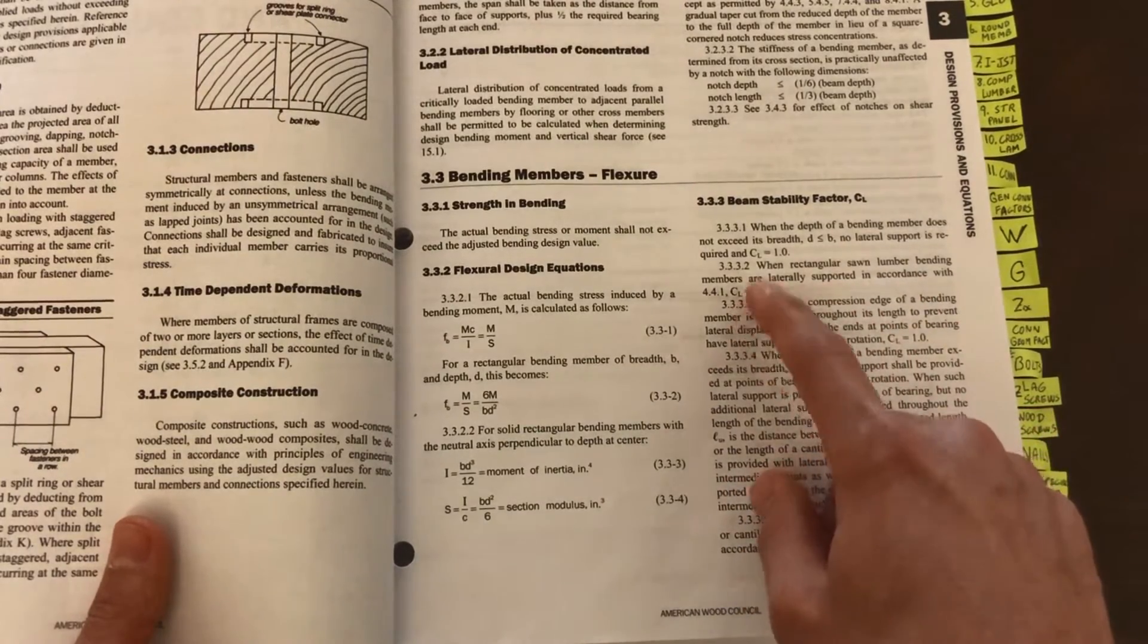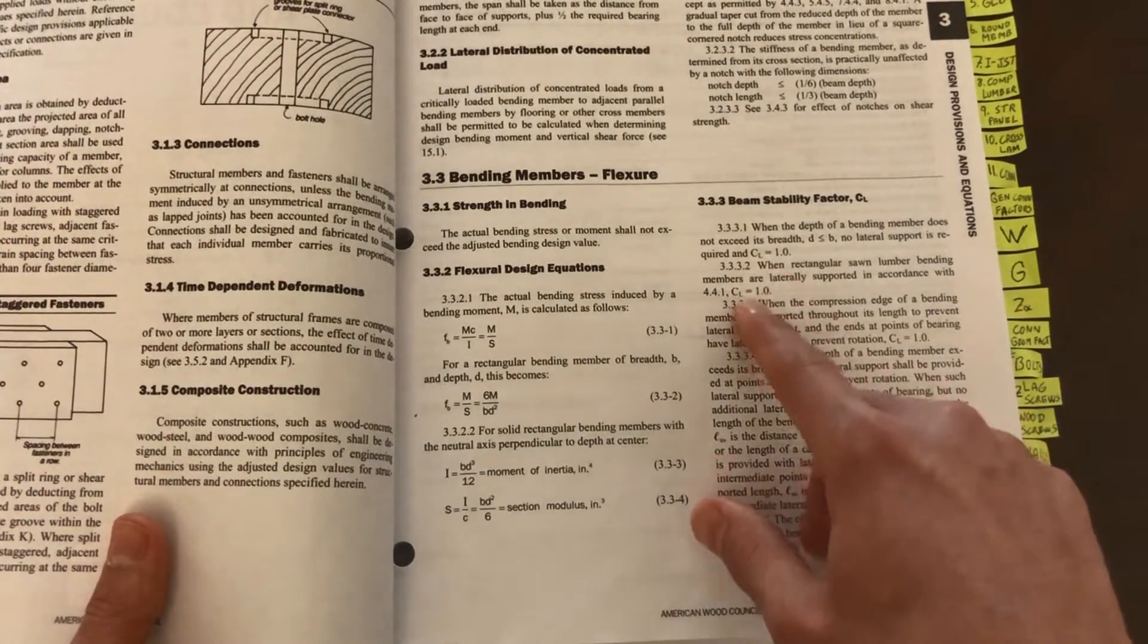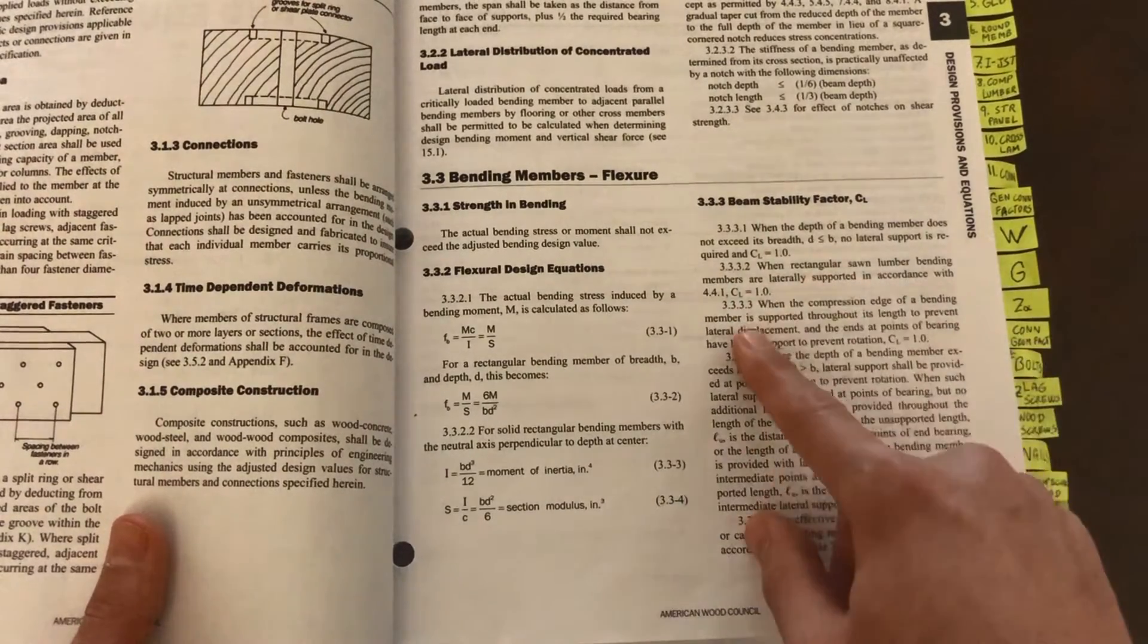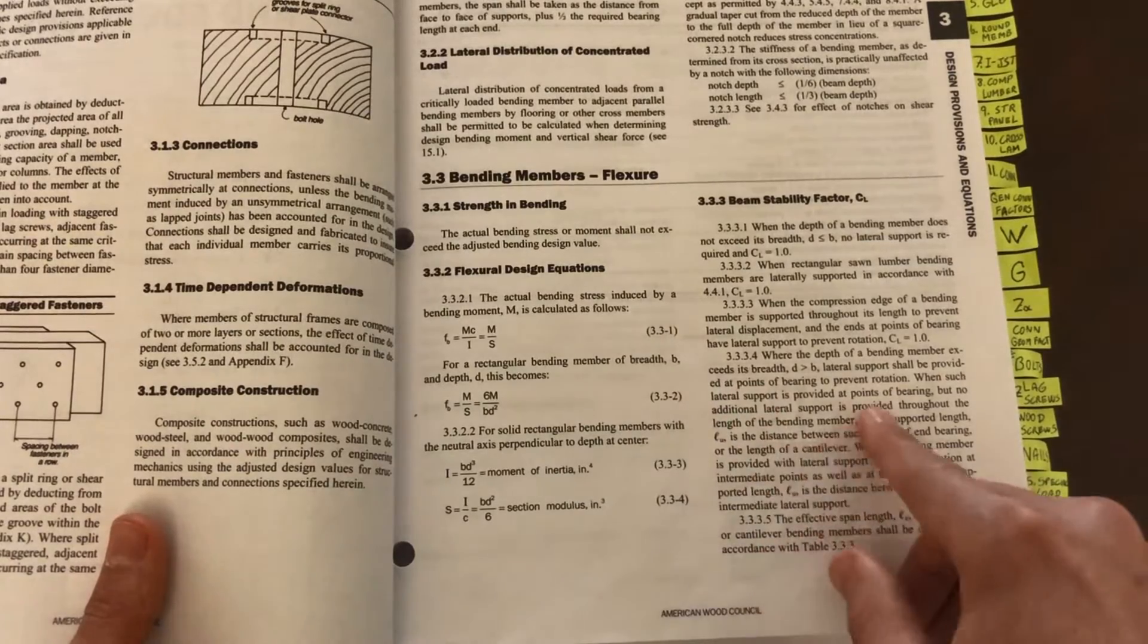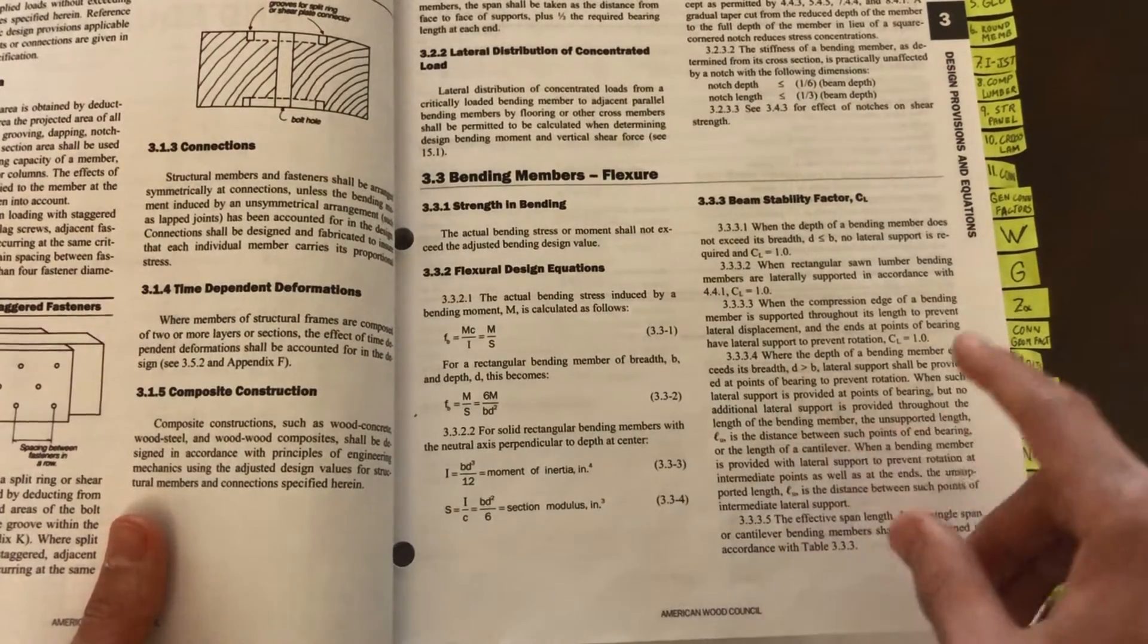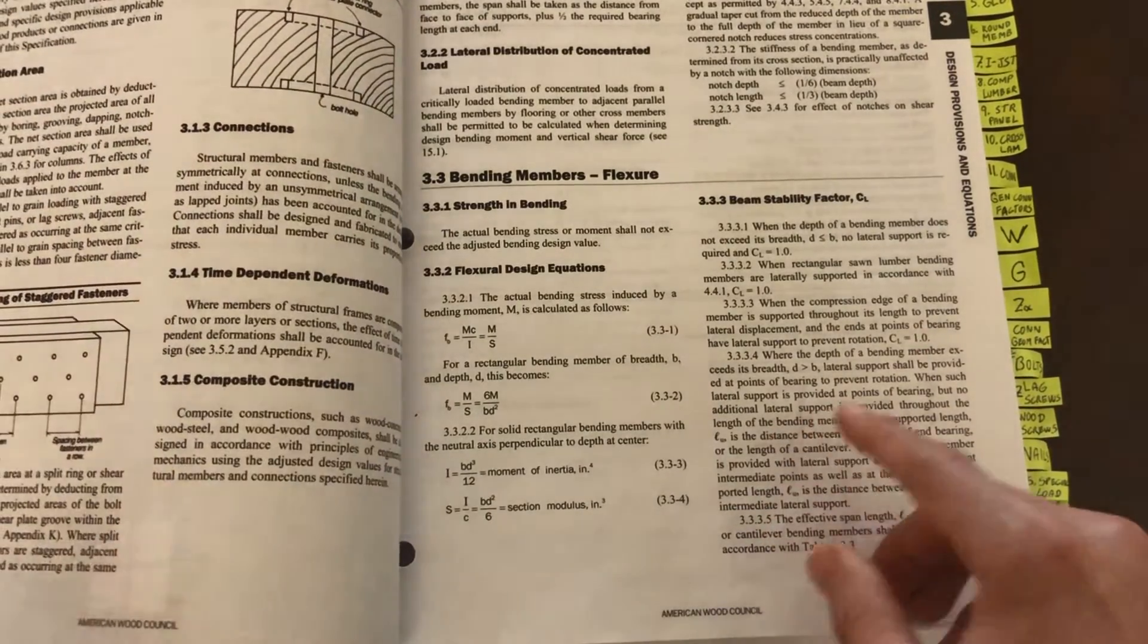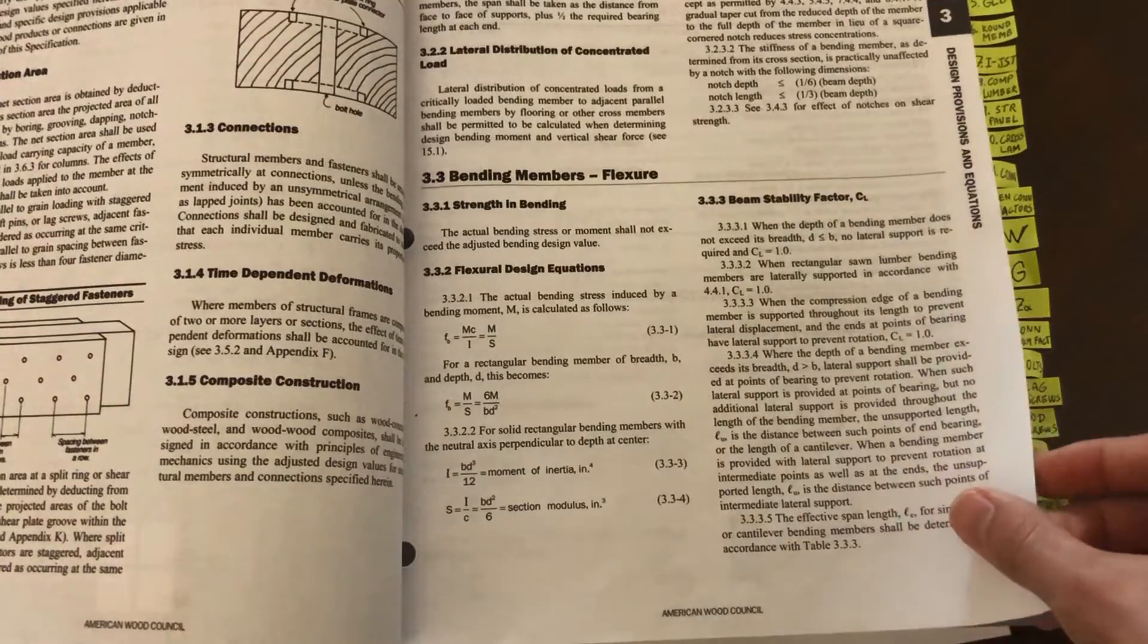The beam stability factor is C sub L. If you have your member where the depth is less than the width - in other words, flatwise - then C sub L is equal to 1, or lateral torsional buckling wouldn't control that case. If the member's compression flange is fully supported or fully braced, which was the case from our previous problem, then C sub L is also equal to 1. Now if it's not fully braced, then we have to calculate C sub L, which is not going to be equal to 1.